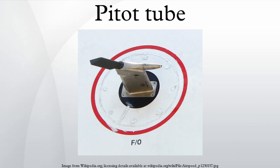A Pitot tube is a pressure measurement instrument used to measure fluid flow velocity. The Pitot tube was invented by the French engineer Henri Pitot in the early 18th century and was modified to its modern form in the mid-19th century by French scientist Henri Darcy.